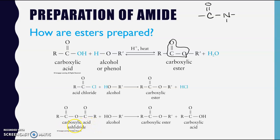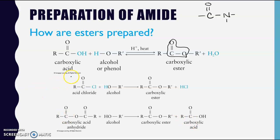Or we could react a carboxylic acid anhydride - remember anhydride means without water, so it's essentially like two carboxylic acids reacted together by removal of a water molecule, joined by a single oxygen. We can react that anhydride with an alcohol to again make an ester and a natural byproduct. These are the different ways that esters are prepared.